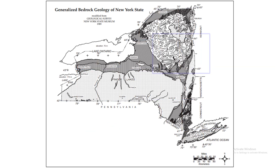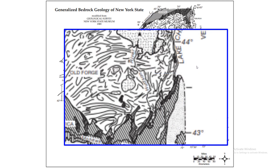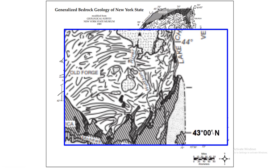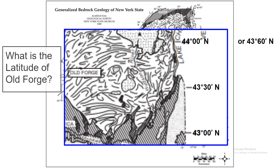Let's do a quick example. The latitude and longitude on this map are read in degrees and minutes. This marker is 43 degrees zero minutes, and this top marker is 44 degrees zero minutes. The minutes go from zero to 60, just like time. So 44 degrees zero minutes is the same as 43 degrees 60 minutes, meaning the middle between zero and 60 is 43 degrees 30 minutes. If we ask what is the latitude of Old Forge, you find Old Forge's dot, read across, and halfway between 43 degrees 30 minutes and 44 degrees is 43 degrees 45 minutes, because halfway between 30 and 60 is 45.